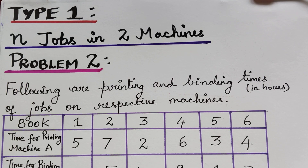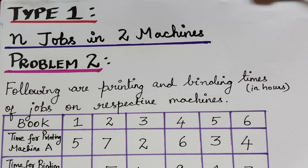Dear students, under the lecture series on the topic sequencing problems, here we have problem 2 under type 1, that is n jobs and two machines. So this is known as a two machine problem.